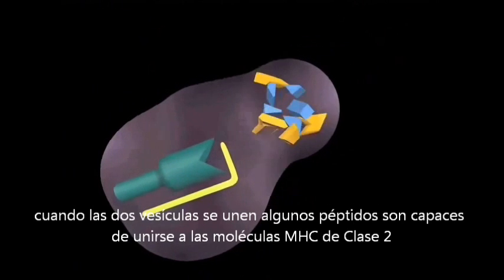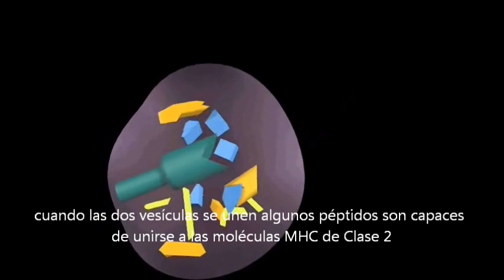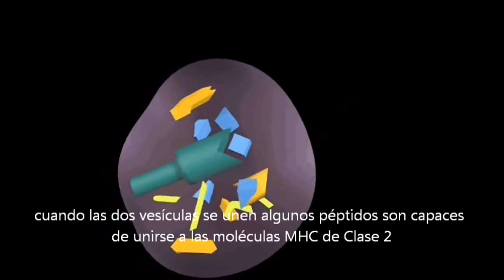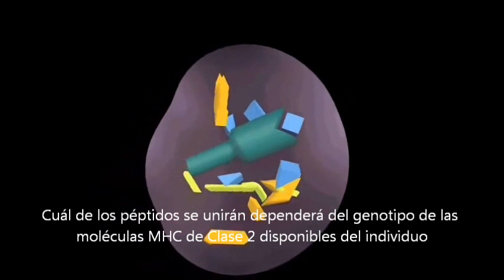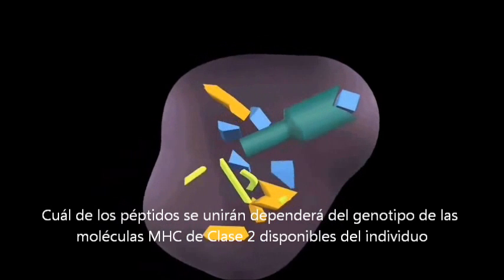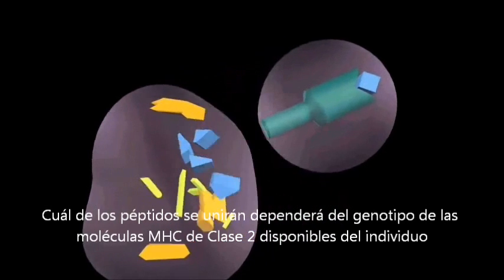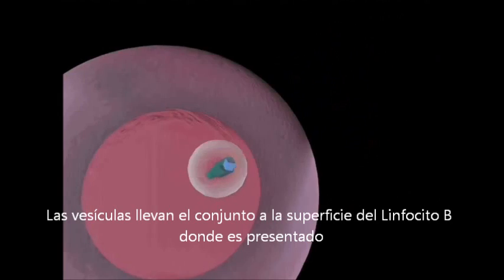When the two vesicles meet, some of the peptides are able to bind to MHC class II molecules. Which of the peptides bind depends on the genotype of class II molecules available in that individual. The vesicles carry the assembly to the surface of the B cell where it is presented.